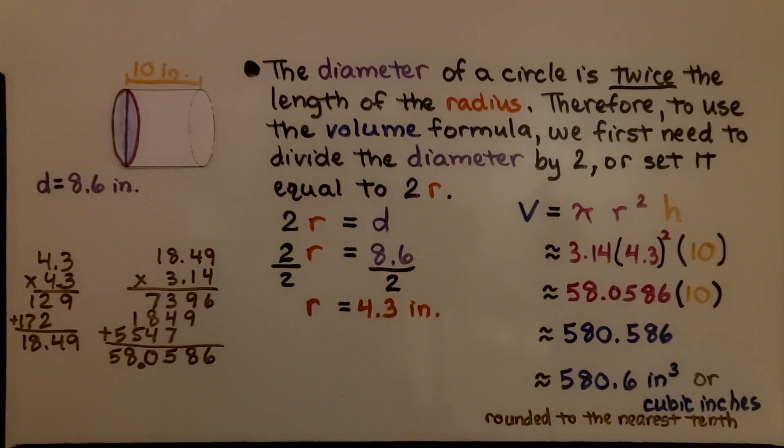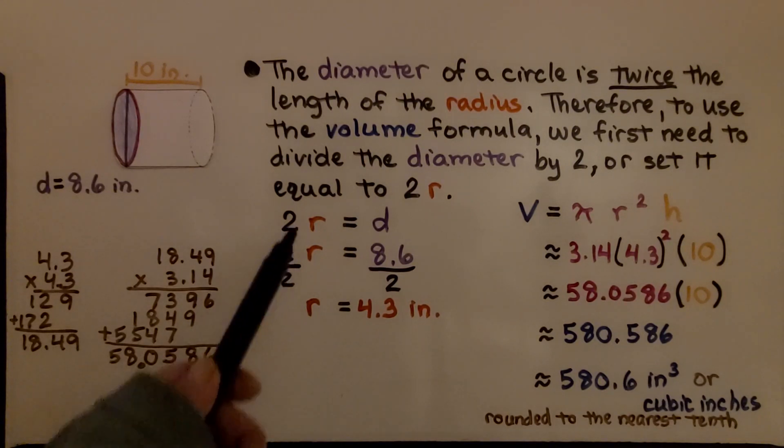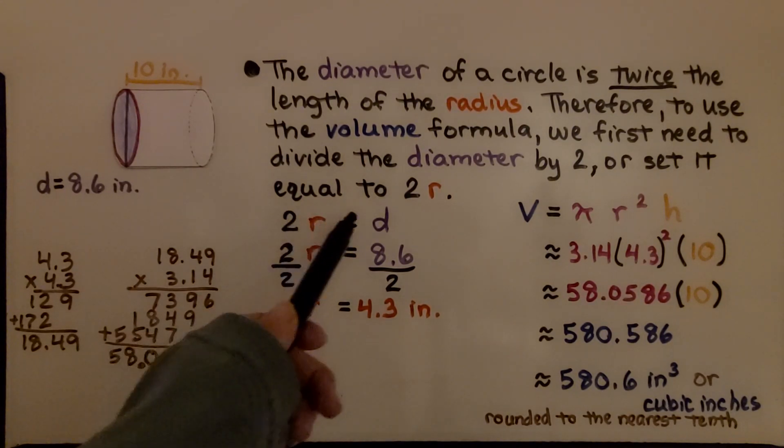The diameter of a circle is twice the length of the radius. Therefore, to use the volume formula, we first need to divide the diameter by 2 or set it equal to 2r. We have 2r for our diameter.